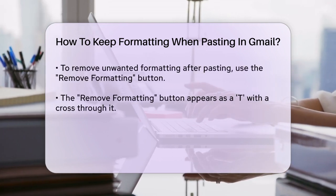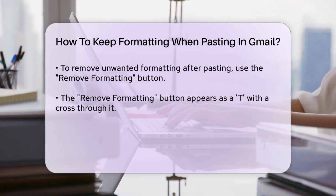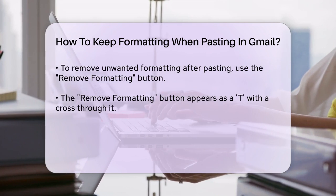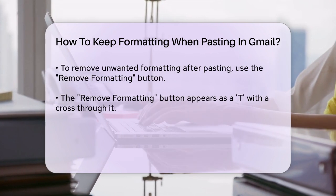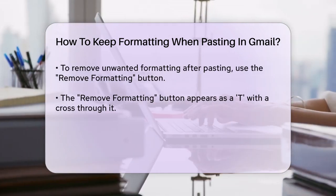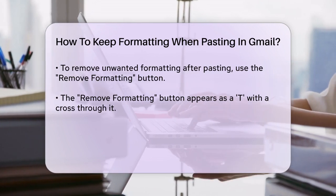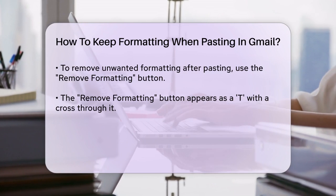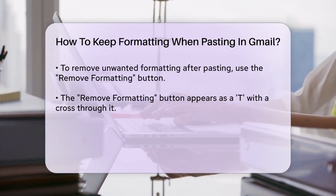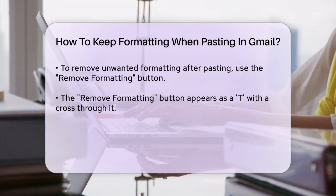However, if you want to keep the exact formatting from the original source without much hassle, there's a simpler trick. When you paste the text into Gmail, it often brings along unwanted formatting. To remove this extra formatting and start fresh, use the Remove Formatting button. This button looks like a T with a cross through it and is located on the far right of the toolbar. Highlight the pasted text and click this button to reset the styling to Gmail's default.